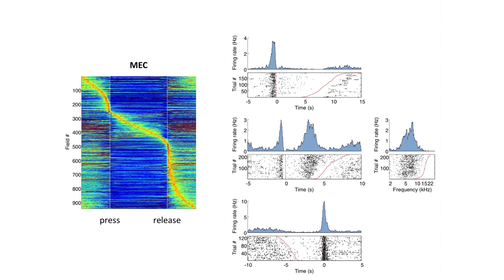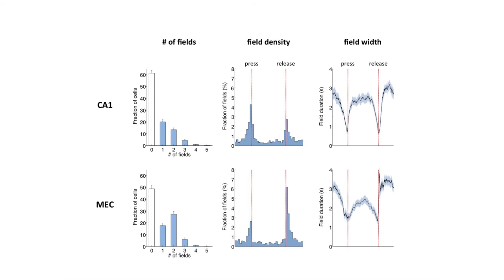Looking at the properties of these cells: the number of firing fields is not that different compared to what you'd see recording an animal in a real environment. In hippocampus, the distribution has one, two, three, or four fields — many cells have one, but there are cells with two and three. In MEC, like in real environments, they typically have more firing fields in this non-spatial cognitive navigation task. The field density shows more cells active at the beginning and end of the lever press than during the middle, but cells tile the entire behavioral time. Field widths are very narrow at lever press, wider between press and release, and narrow again at release.